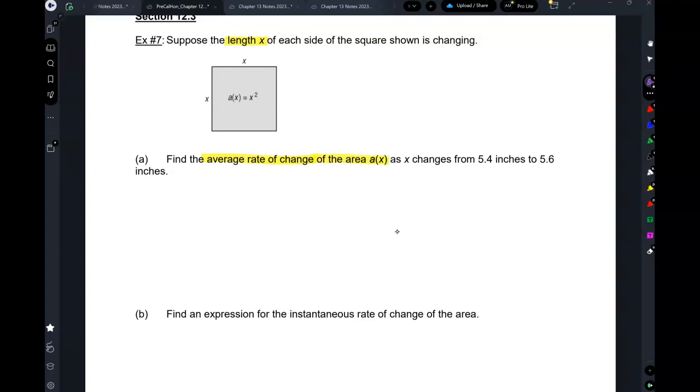Average rate of change was f of b minus f of a over b minus a. So whatever quantity it is that's changing, the average rate of change of that is that same quantity at b minus the quantity at a over b minus a. So if you want the average rate of change of the area, that's going to be A of b minus A of a over b minus a.